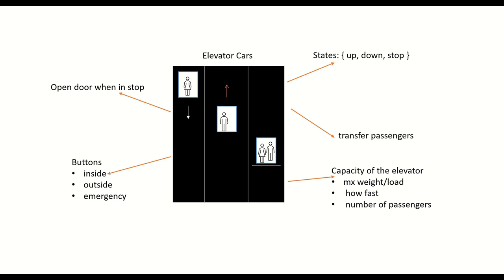The next thing is the elevator display. Inside an elevator you will see a display, and also outside, showing which floor the elevator is currently on and in which direction it is going. These are the basic functional requirements that define our elevator car.